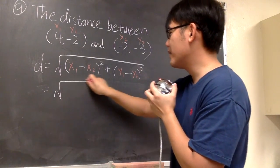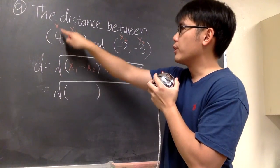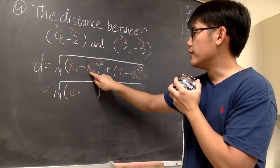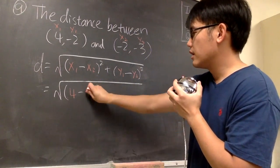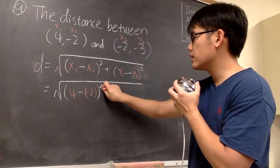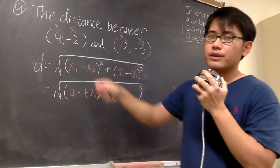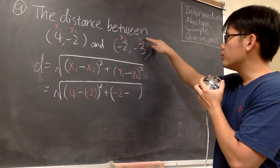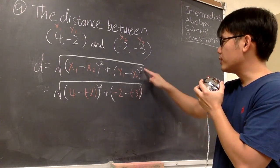We first open the big square root, and then we have this parentheses. x1 is equal to 4, so we put down the number 4. And then we subtract the value of x2 — x2 is equal to negative 2 — so we put down negative 2 right here, using parentheses. And this is raised to the second power. Then we add another parentheses: y1 is negative 2, so we put down negative 2, and then we subtract y2, which is negative 3. So we put down negative 3 in parentheses, and raise that to the second power.